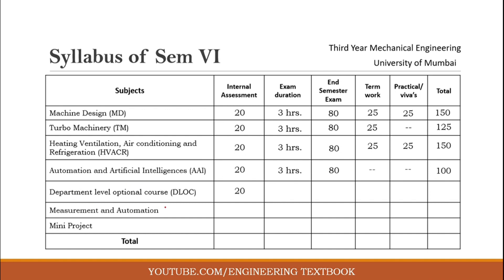Department Level Optional Course (DLOC): as mentioned, there are three optional courses. DLOC consists of 20 marks internal assessment, 3 hours exam duration, and 80 marks theory paper. Because it is a department level optional course it is an internal subject and does not have term work or practicals or viva. Therefore the total marks for DLOC is 100 marks.